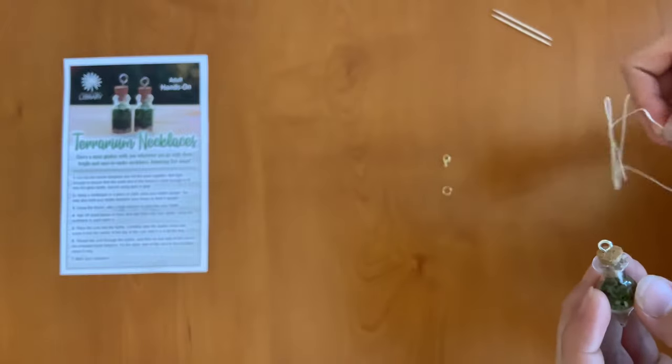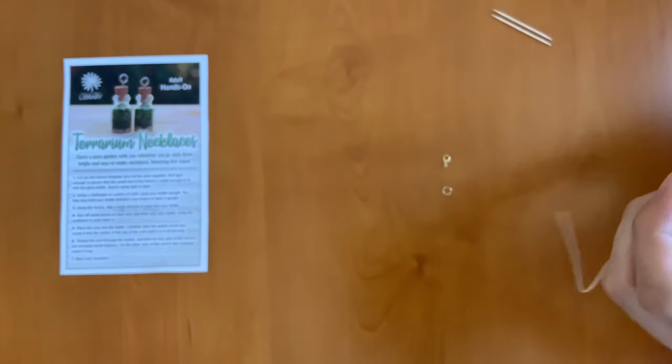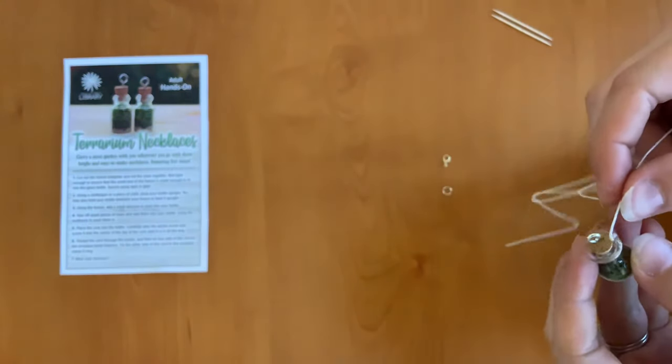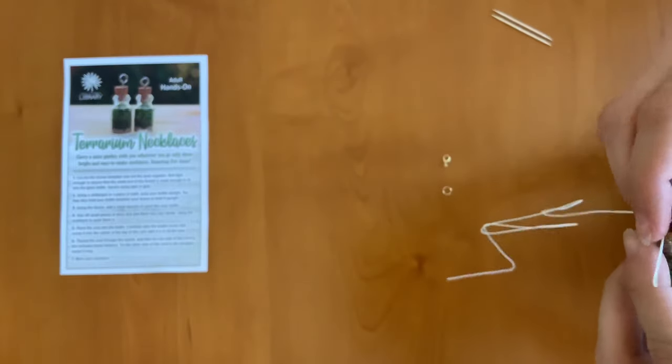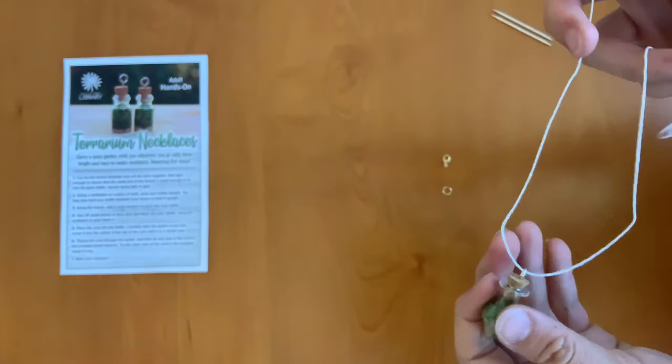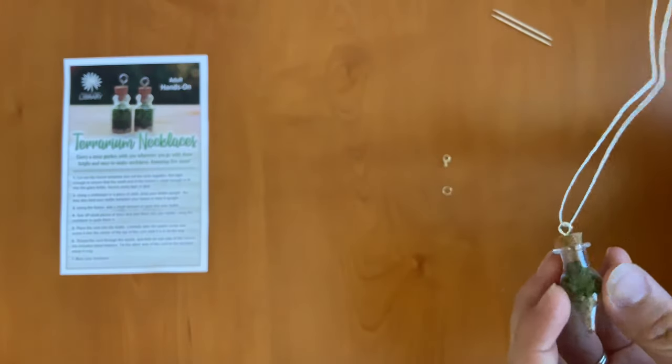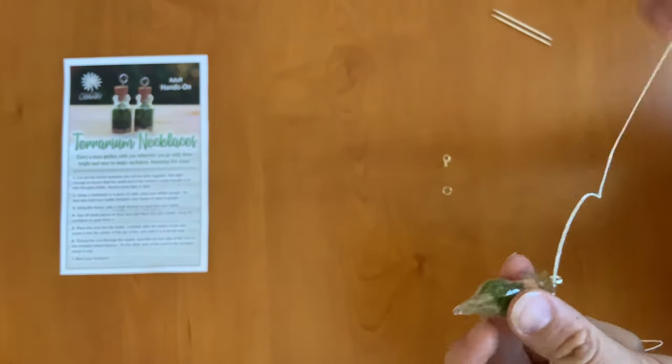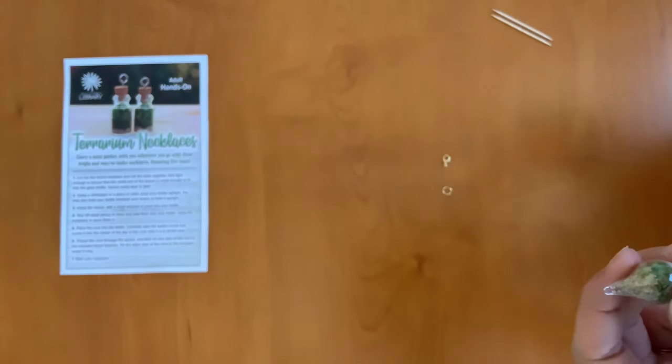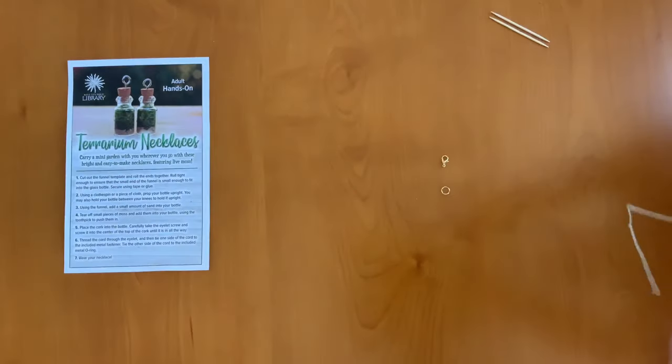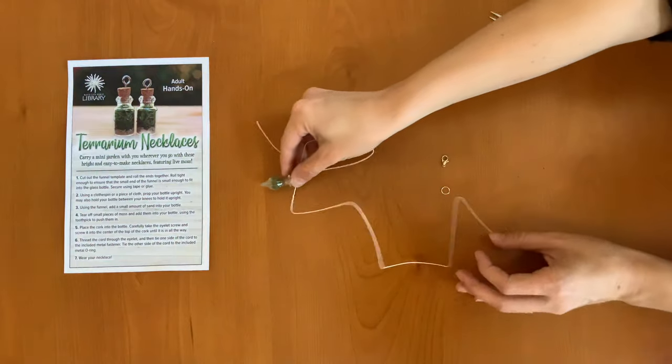Next you're going to take your string and we're going to thread the string through the eyelet just like that. Now we want to thread our string through the eyelet before we put on the o-ring and the fastener because otherwise it won't fit through.